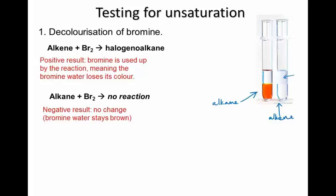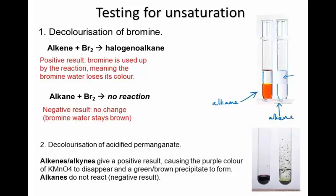There is another test used to distinguish between alkanes and alkenes. This works by a different reaction, but it fulfills the same function as decolorization of bromine — it's a test for unsaturation. In this test, a solution of acidified potassium permanganate, which is a deep purple colour, is added to the hydrocarbon. If the purple colour disappears and a browny-green precipitate forms, the hydrocarbon is an alkene or an alkyne. If not, it's an alkane.